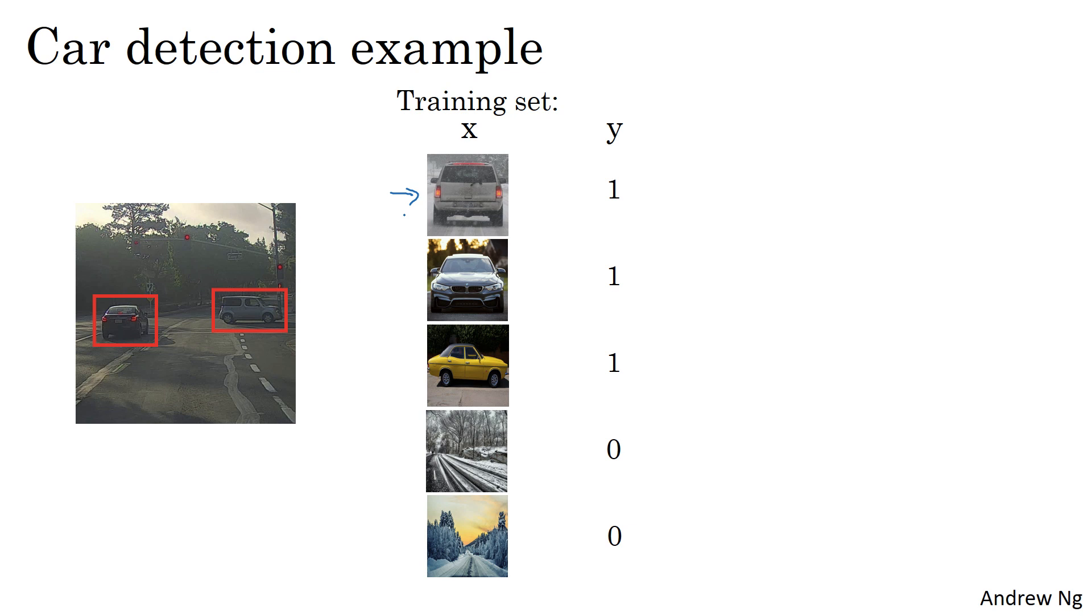Given this labeled training set, you can then train a ConvNet that inputs an image, like one of these closely cropped images, and then the job of the ConvNet is to output y, 0 or 1: is this a car or not? Once you've trained up this ConvNet, you can then use it in sliding windows detection.